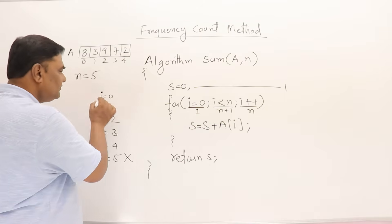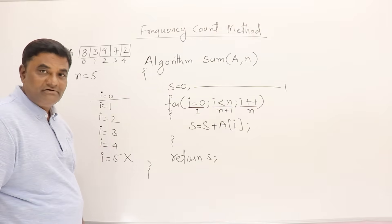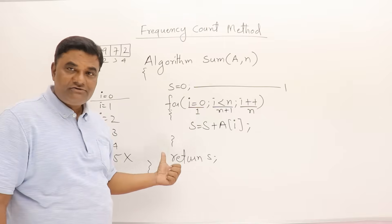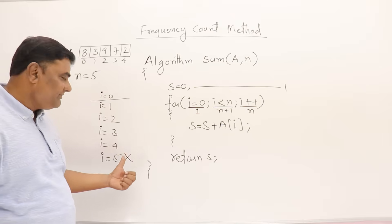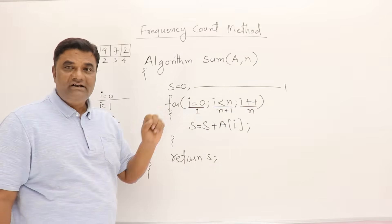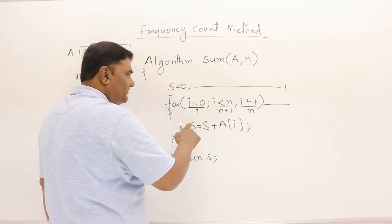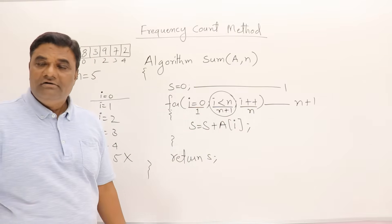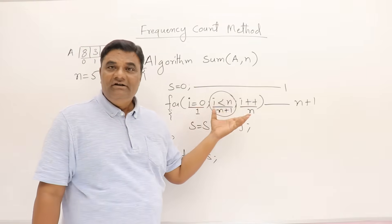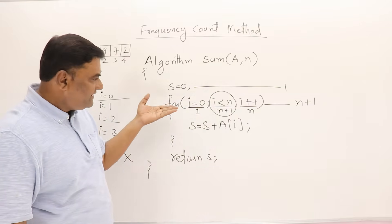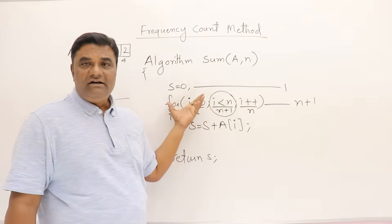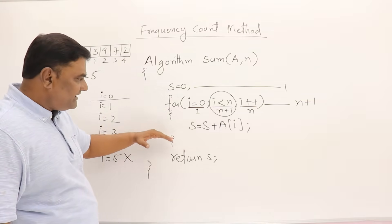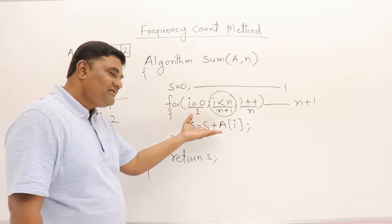i was initially zero, so how many times has i changed? Five times. Then how many times is this condition checked? Six times — five plus one. It was true four times and false the fifth time when i became 5. So the condition executes n plus one times. The statement inside the loop also repeats for n times, so whatever statement is inside the loop will execute n times.